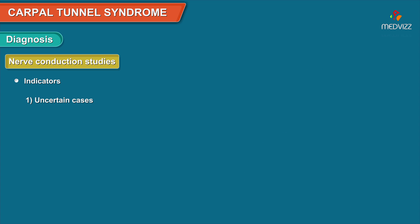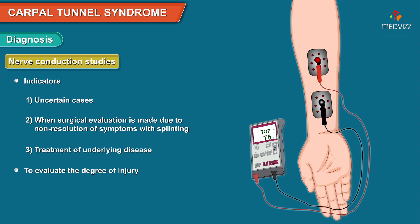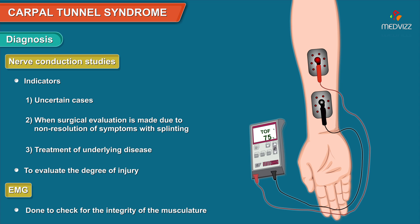In uncertain cases, or when surgical evaluation is considered due to non-resolution of symptoms with splinting and after treating the underlying disease, nerve conduction studies are done to evaluate the degree of injury. In some cases, electromyography is also done to check for the integrity of the musculature.